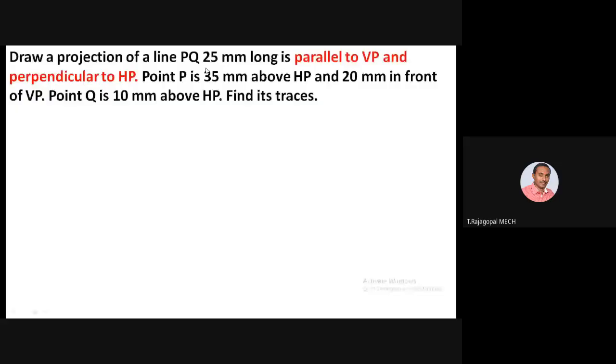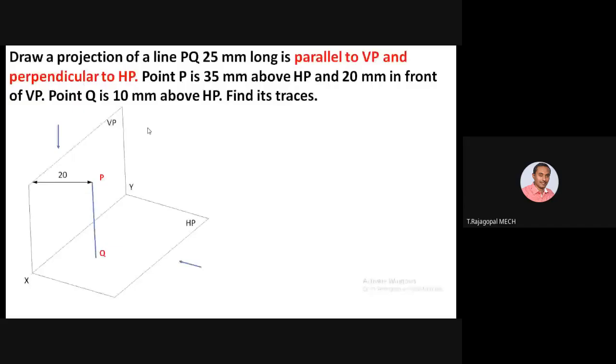Now a similar problem: line PQ is perpendicular to HP and parallel to VP. Since it is perpendicular to HP, extending it will cause it to meet the horizontal plane, so a horizontal trace can be obtained. The line is 20 mm in front of VP and 35 mm above HP. Extending PQ, it meets the horizontal plane — that point is the horizontal trace.